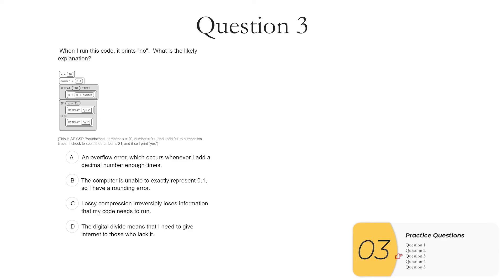Question three, when I run this code, it prints no. What's the likely explanation? So this code is probably something you have not seen before. It is how the AP exam is given. The AP exam is not given in Scratch or Python or any of that. It's got its own code that it gives you with its own terminology. With that said, year after year, I've seen kids get it. It's not really a problem for people to get it. You just have to be sure that you know it before the exam. And anyway, what this one is doing is saying X is equal to 20. The arrow is like an equal. Number is equal to 0.1. I'm going to repeat this 10 times where I add number to X. Then I'm going to check to see if X is equal to 21. So what's going on? A, an overflow error, which occurs whenever I add a decimal numbers enough times. Overflow errors do happen, but it's not when you add decimal numbers enough times. It's when the number of combinations that I need is more than the number of bits will give me. That is, when combinations is greater than 2 to the bits. But anyway, that's not what's going on here at all. So it's not A.